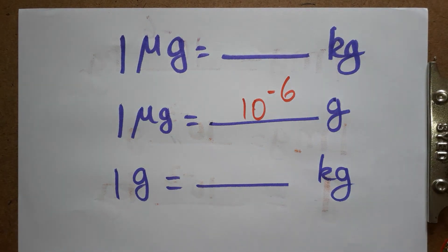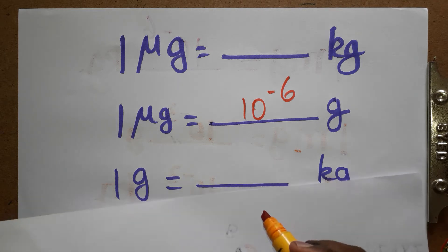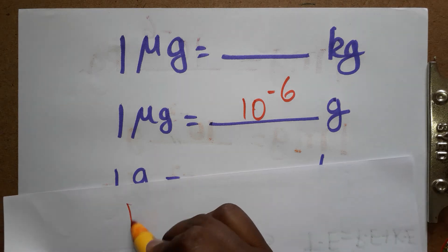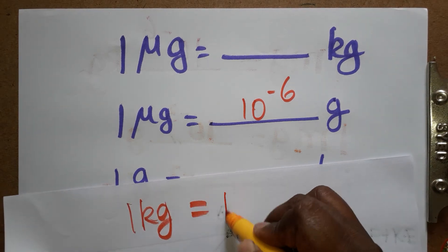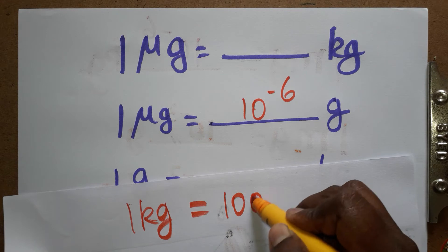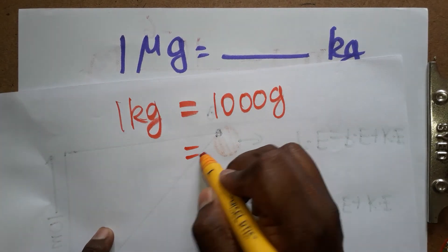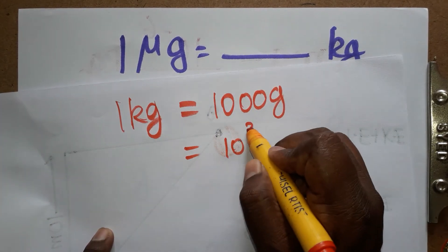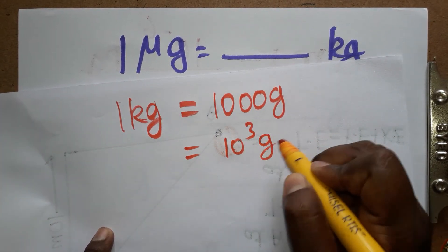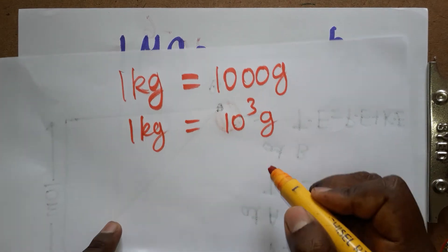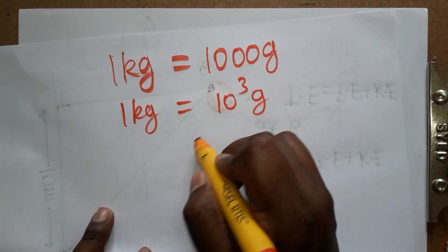Now we need to find one kilogram in grams. One kilogram is equal to one thousand grams. We can write one thousand as 10³, so one kilogram is equal to 10³ grams.